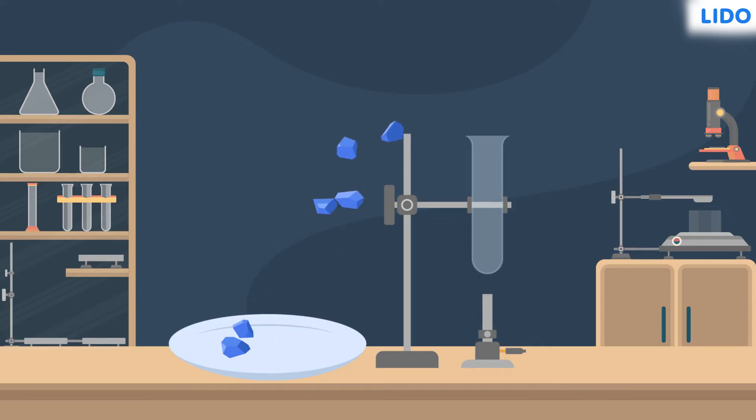For this, we will take a few crystals in a test tube and heat them. The color of the crystals change from blue to white. Also, there are water droplets forming on the mouth of the test tube.